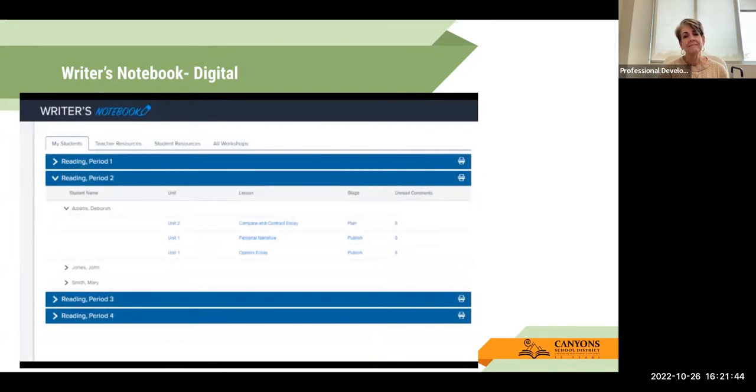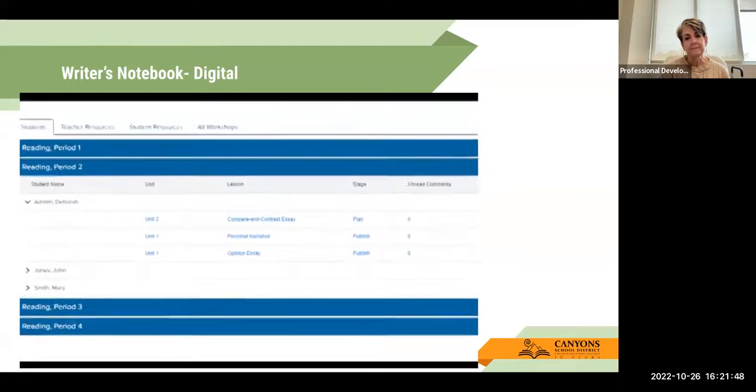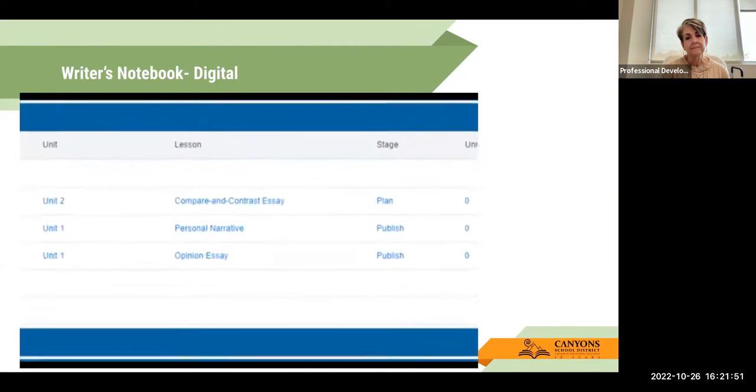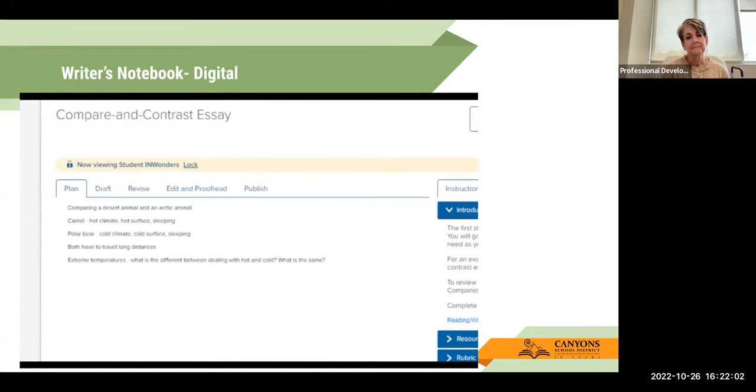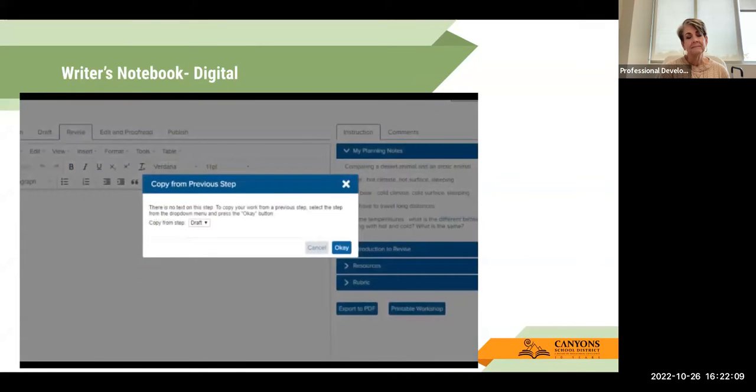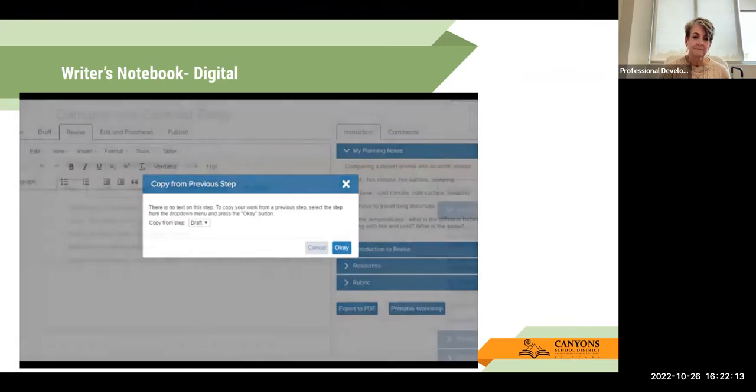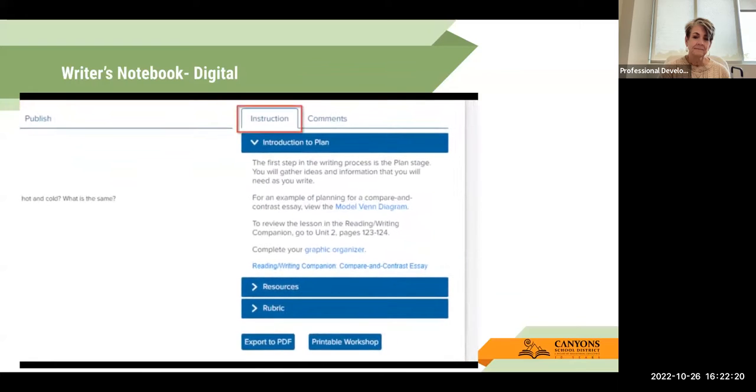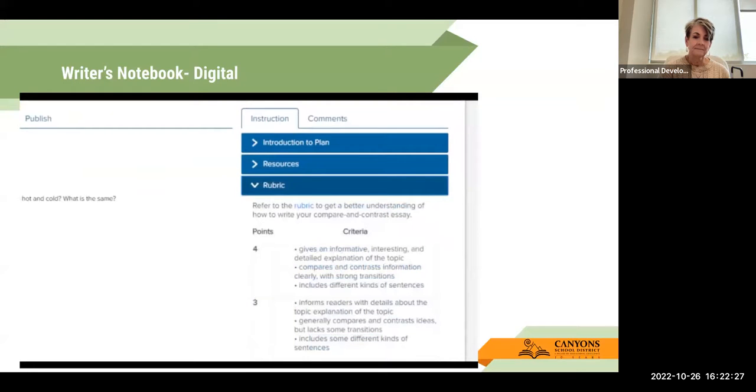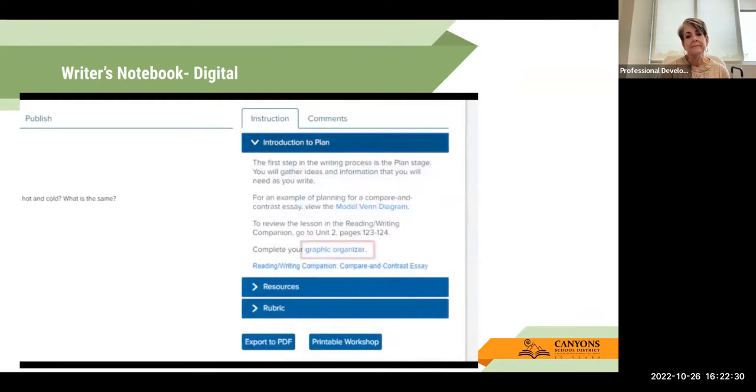You will review your students writing at each step in the writing process. On the My Students tab, expand a student blade to view the workshops the student has worked on, as well as the stage completed. Click the lesson or the stage to access the student's exercise. On the left side of the page is the area where your students complete their writing. The tabs correspond to every step in the writing process. The online writer's notebook allows the student to copy their work to the next step to work on it further. You can look at previous tabs to review their older work and any changes made. The instruction tab on the right side contains the instructions and resources available for this step. This is also where you can access the scoring rubric. Any resources your students submit, such as the graphic organizer in the plan stage, will appear on your binder on the My Students Work tab.